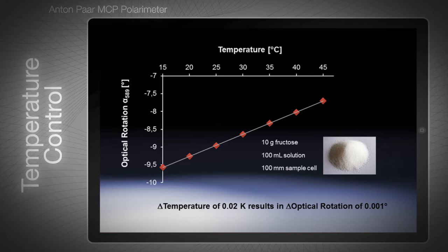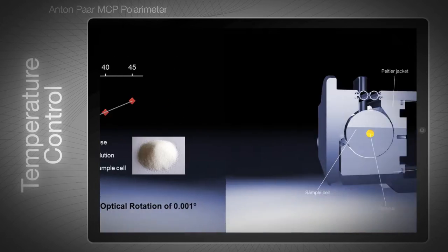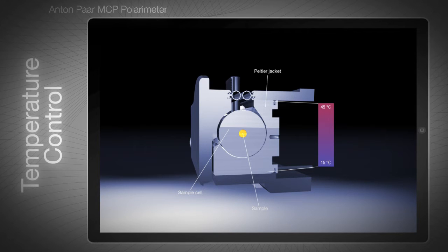Excellent temperature control is important for the majority of samples. This is a cross-section of the MCP sample cell located in the metal Peltier jacket. The Peltier jacket is heated or cooled quickly by powerful Peltier elements, significantly reducing your waiting time.